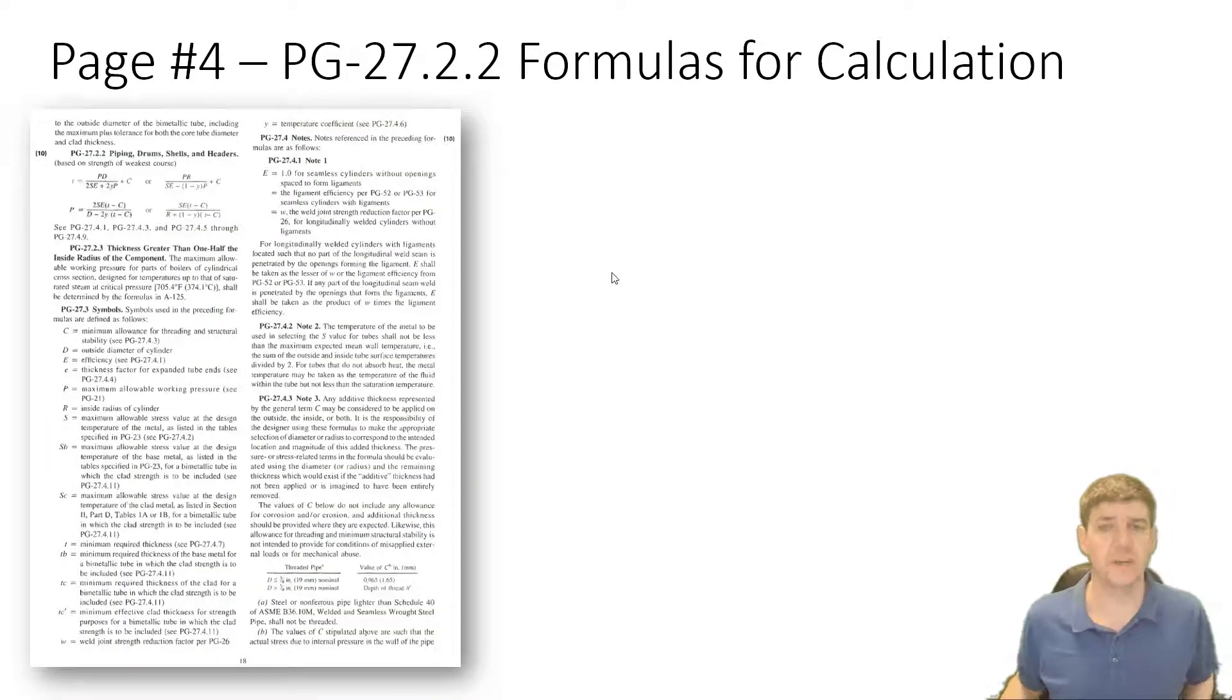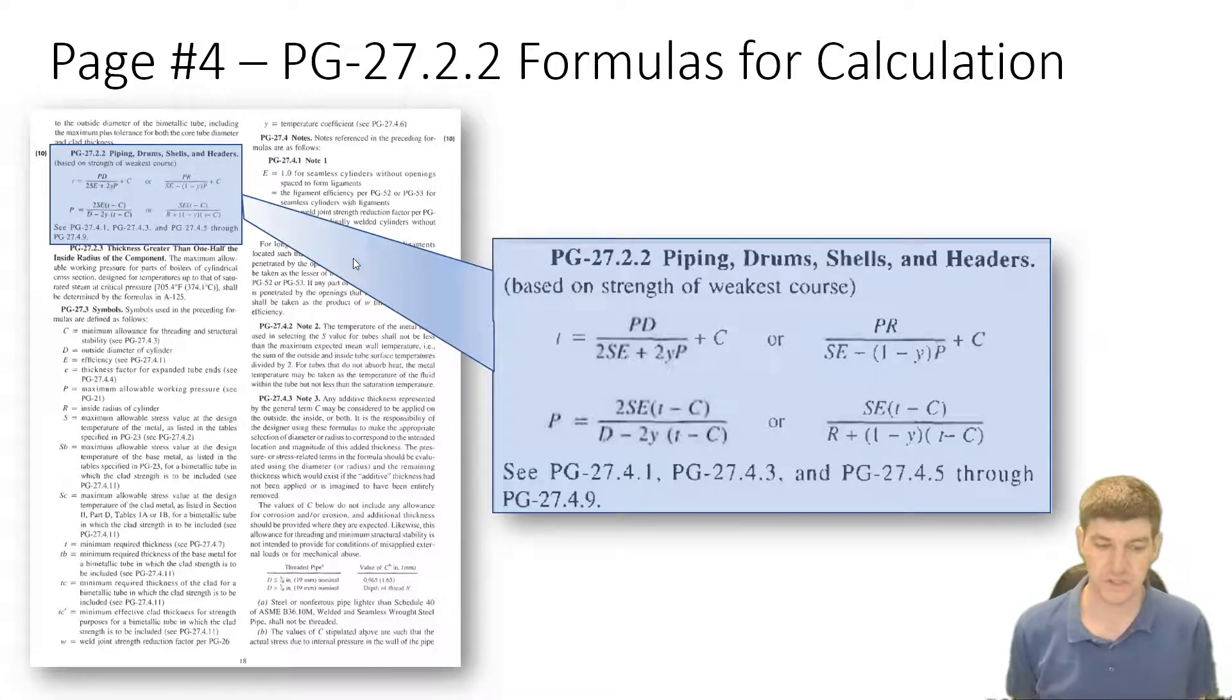Okay, so when we're talking about piping, drums, shells, headers, etc., not tubing, we have a series of calculations. So we can find those on page four of your document under PG 27.2.2, again formulas for calculation for piping, drums, shells, and headers. So we have four equations now, and let's talk through some of the details on these four equations.